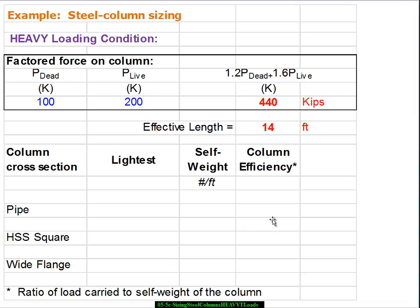Then we're going to record the self-weight of that column and then finally the column efficiency. I remind you that the column efficiency is the load that's being supported divided by the self-weight of the column, which will be the self-weight in pounds per foot times the length of the column, which in this case is 14 feet.